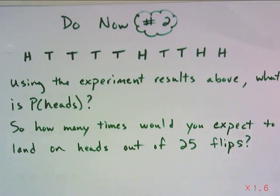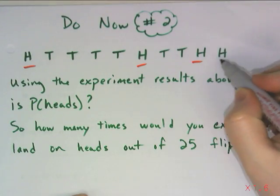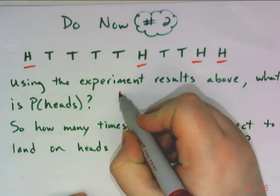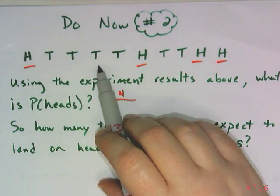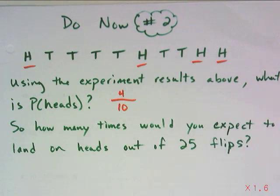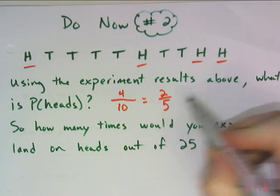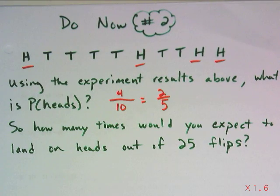So first we're going to start with this. Using my experimental results, what is the probability of landing on heads? Well, 1, 2, 3, 4 - four heads for my desired outcomes out of 1, 2, 3, 4, 5, 6, 7, 8, 10 - out of 10 trials. That can be reduced though. So I have a 2 fifths chance, according to my experimental results, of landing on heads.